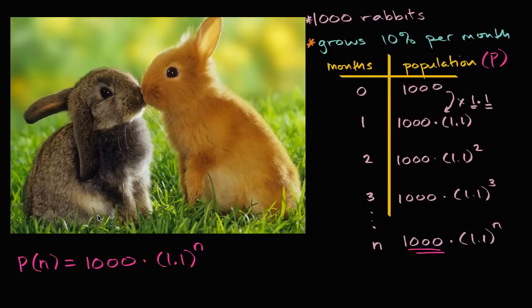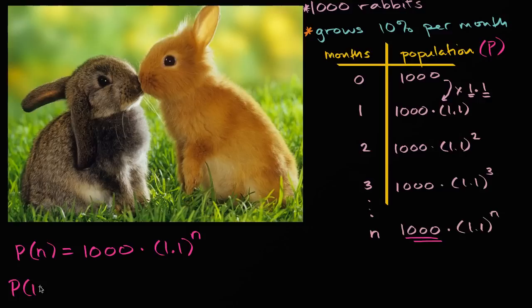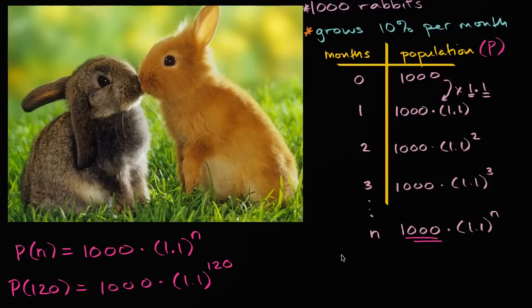And you might say, okay, well, this makes sense. It doesn't look like we're getting crazy numbers. But just for kicks, let's just think about what's going to happen in 10 years. So 10 years would be 120 months. So the population at the end of 120 months is going to be 1,000 times 1.1 to the 120th power.